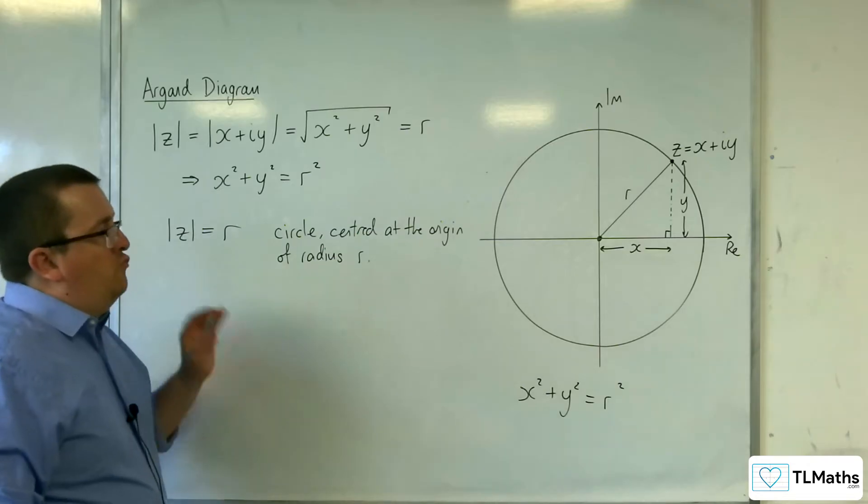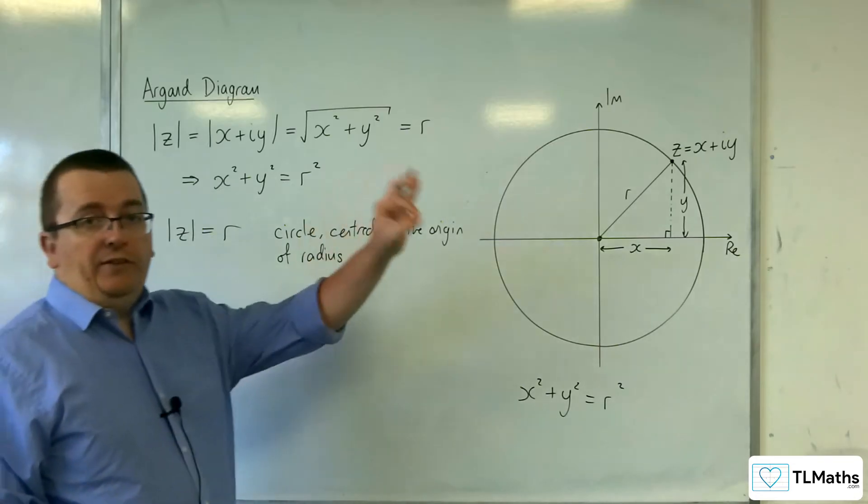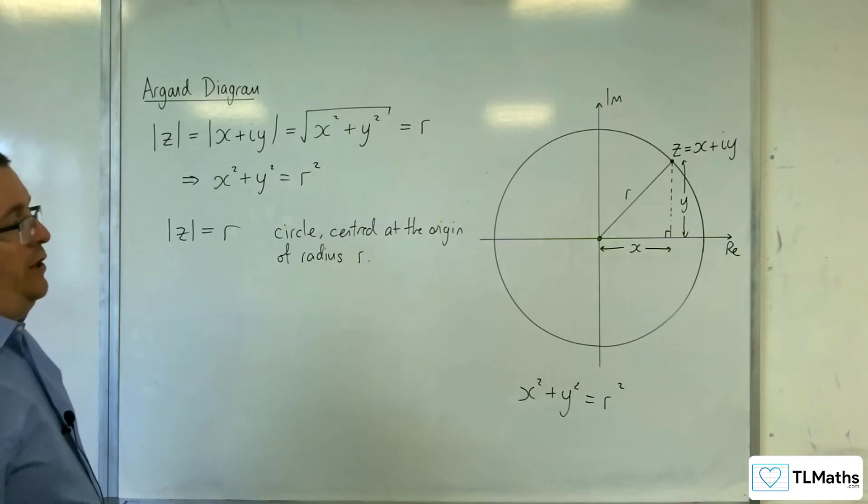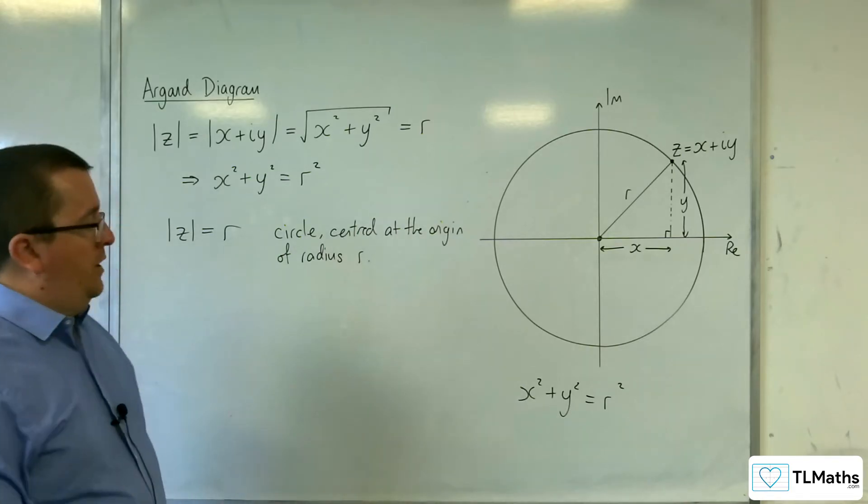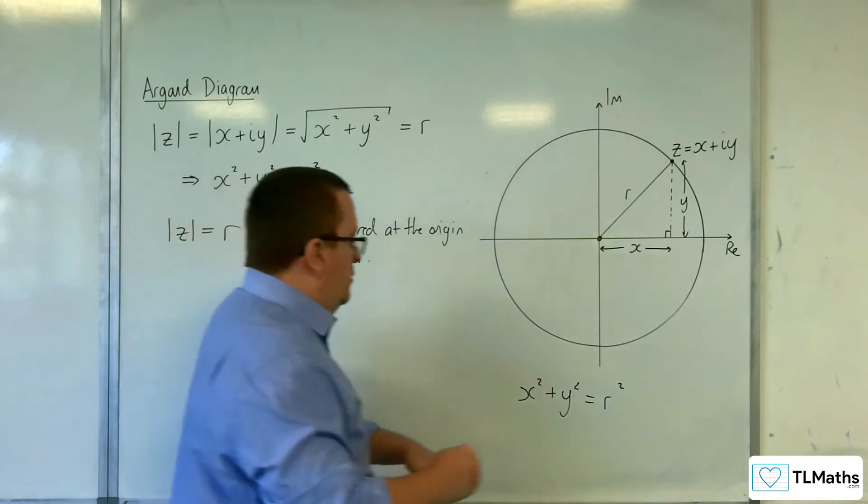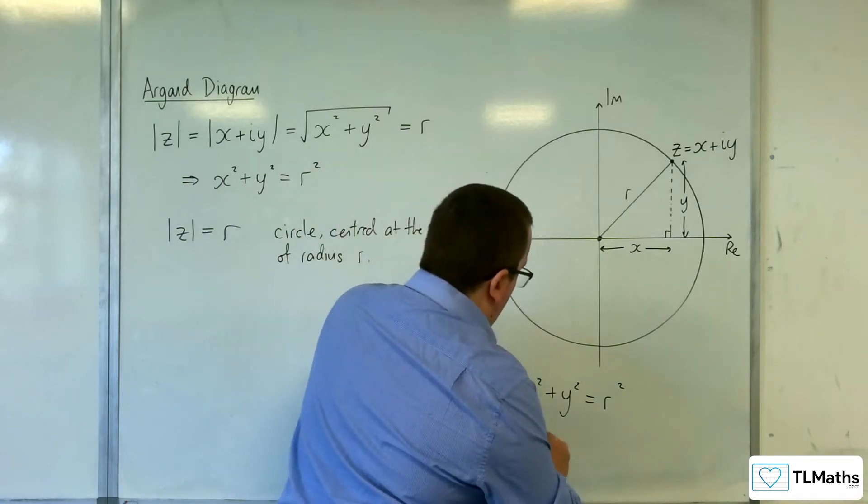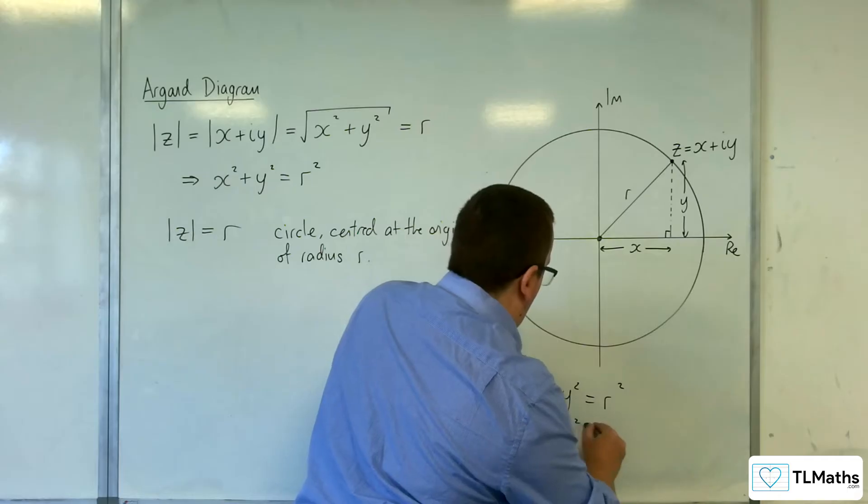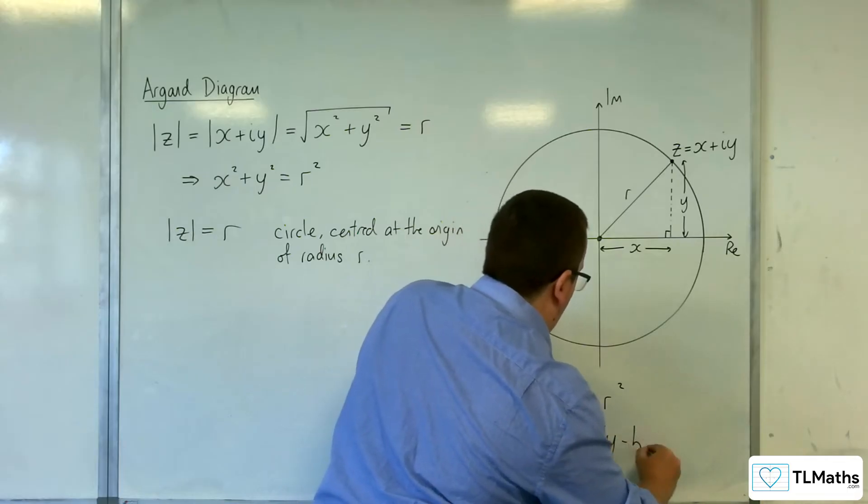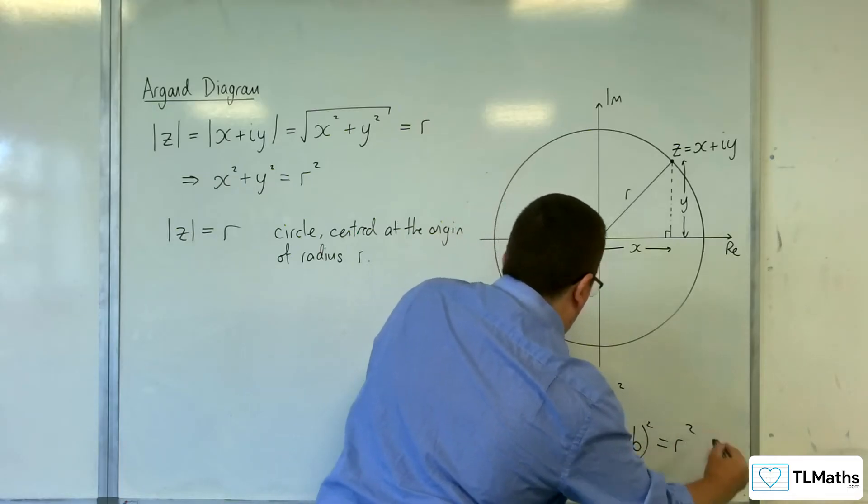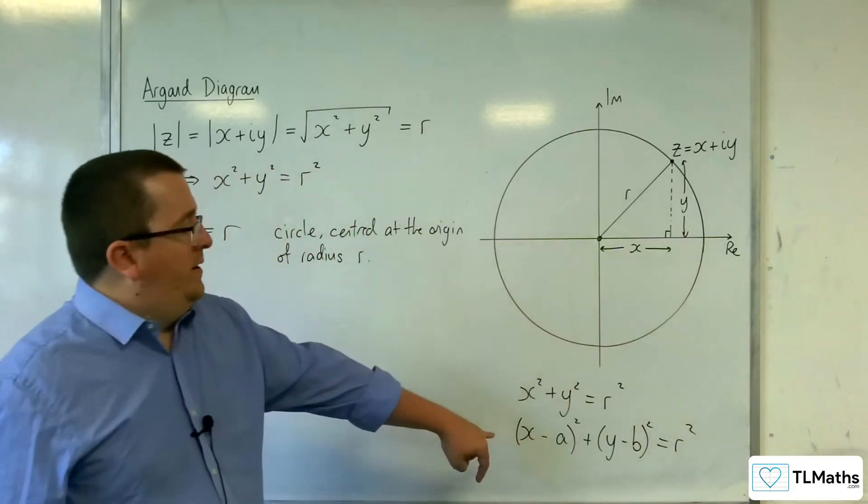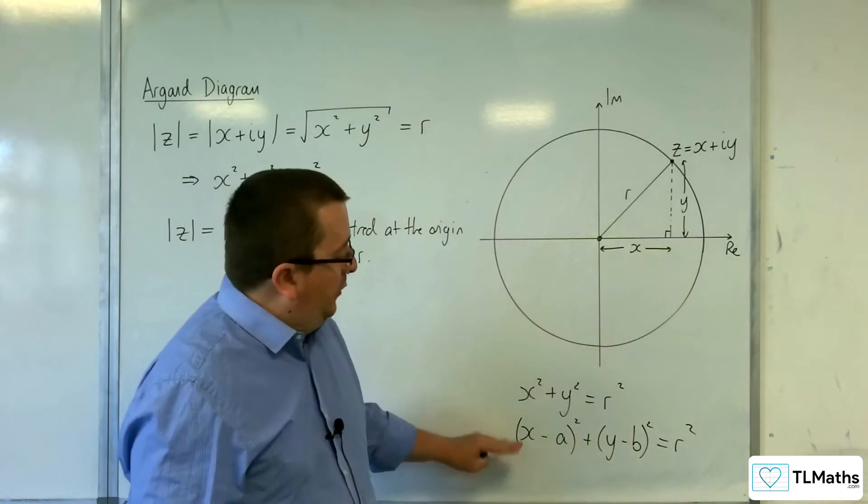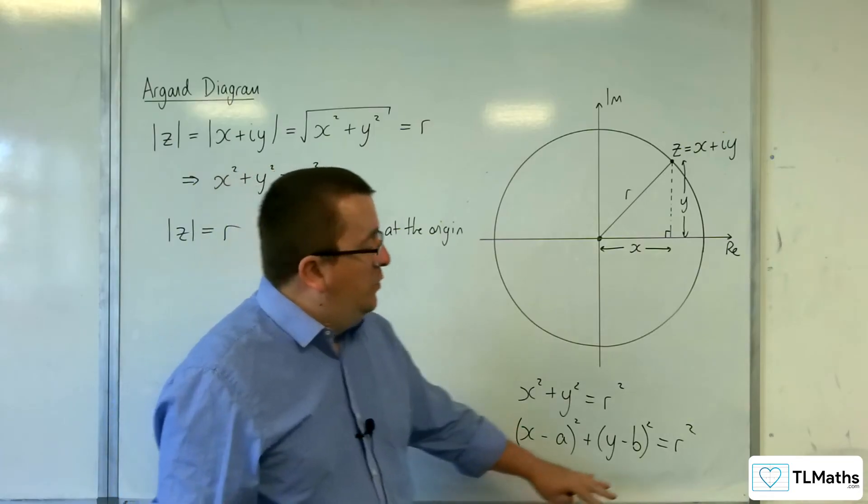Now, if you're going to reposition the circle so it's centred elsewhere, not on the origin, then you would use some kind of transformation. So, we know that a circle centred at (a,b), for example, would have the equation (x - a) squared plus (y - b) squared equals r squared. So, this is a circle centred at (a,b) with radius r.